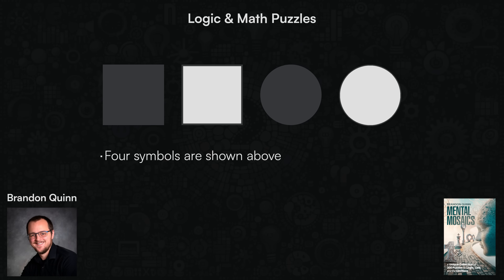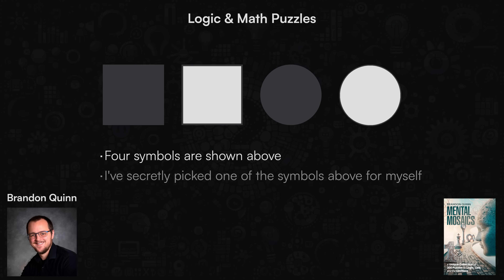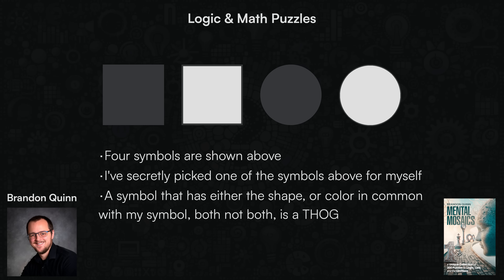Four symbols are presented here: a black square, a white square, a black circle, and a white circle. I've secretly picked one of these symbols for myself, but I'm not going to tell you which one I've picked. A symbol that has either the shape or the color in common with my symbol, but not both, is called a Thog. So while I can't tell you what symbol I picked, I can tell you that the black square is a Thog.